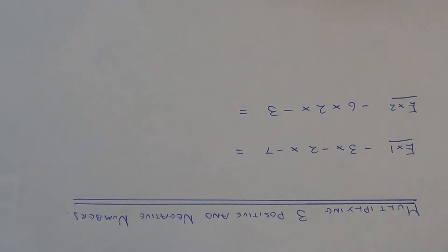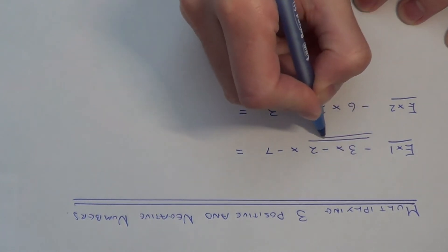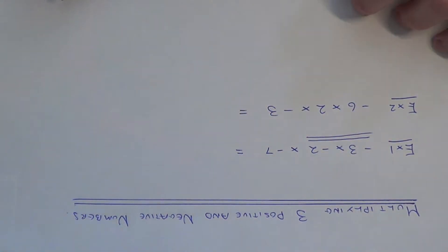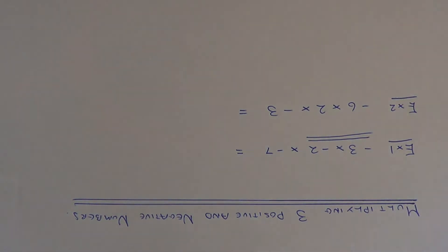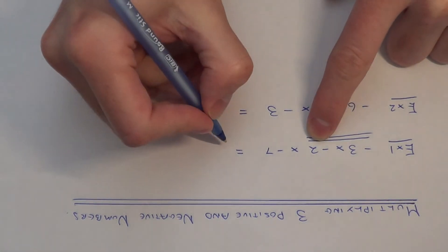We've got minus three times minus two times minus seven. The first thing we need to do is work out minus three times minus two. If we multiply two negatives together you get a positive answer. So minus three times minus two will be plus six.